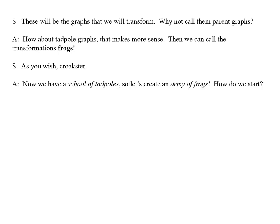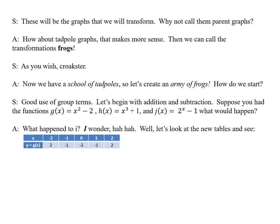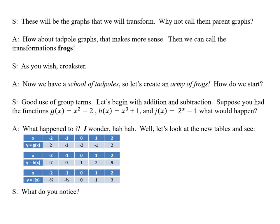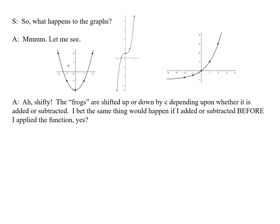Now, we have a school of tadpoles, so let's create an army of frogs. How do we start? Good use of group terms. Let's begin with addition and subtraction. Suppose you had the functions g(x) = x² - 2, h(x) = x³ + 1, and j(x) = 2^x - 1. What would happen? What would happen to i? I wonder. Ha! Well, let's look at the new tables and see. Again, you may want to try this on your own. What do you notice? It's obvious for any function, f(x) + c just adds c to the corresponding y value. So what happens to the graphs? Hmm. Let me see. Again, you may want to try this on your own by pausing the video first. Ah, shifty! The frogs are shifted up or down by c depending upon whether it is added or subtracted.